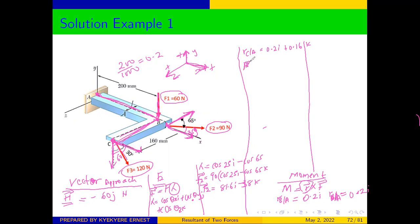The moment for force F1 equals R_B/A cross F1, which is 0.2i cross negative 60j. Since i cross j equals positive k, the moment for F1 is negative 12k Newton-meters.